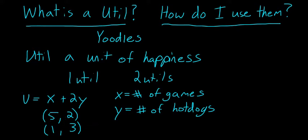So, if I had five games and two hot dogs, my utility would be equal to five plus two times two, or nine. And if I had the other option of one game and three hot dogs, it would be equal to one plus two times three, which would be equal to seven.